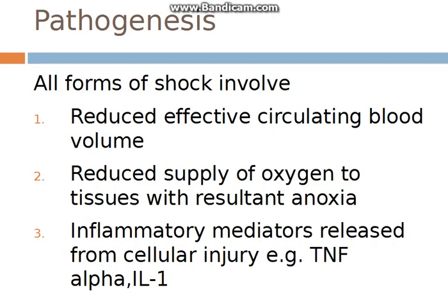Now studying the pathogenesis — the basic pathogenesis of all forms of shock is that there is reduced effective circulating blood volume. Blood volume can be normal, but the tissues being supplied are not getting adequate supply, meaning the effective blood volume is reduced. There can be reduced supply of oxygen to the tissue resulting in anoxia, and inflammatory mediators will be released because of the cellular injury.